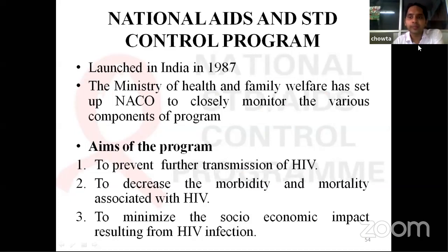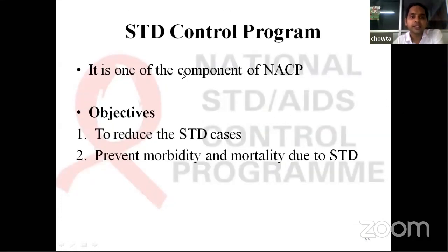National AIDS and STD Control Program was launched in 1987 in India. The Ministry of Health and Family Welfare set up NACO — National AIDS Control Organization — launched in 1992 to closely monitor the various components of the program. Aims are to prevent further transmission of HIV, decrease morbidity and mortality associated with HIV, and minimize the socioeconomic impact of HIV infection. The STD Control Program is one component of the National AIDS Control Program, with objectives to reduce sexually transmitted disease cases and prevent morbidity and mortality due to STDs.